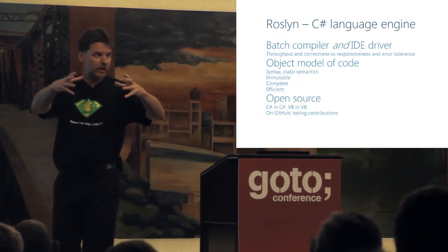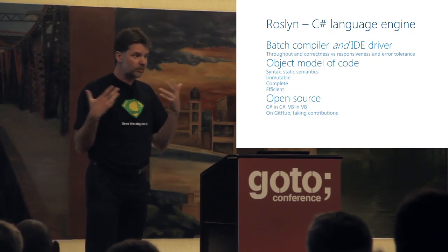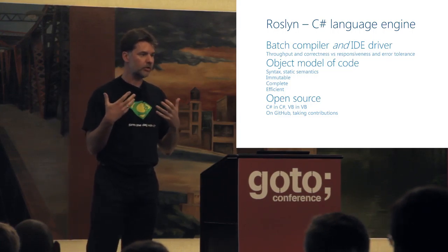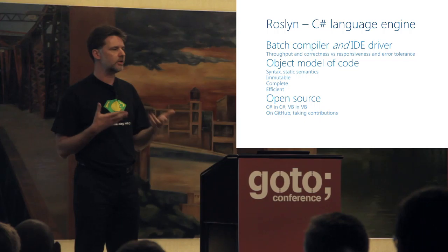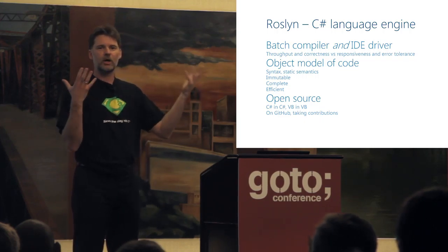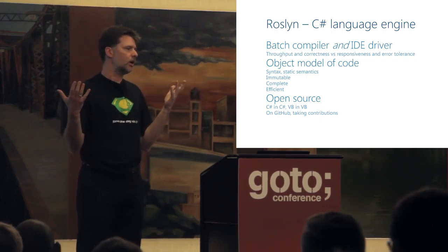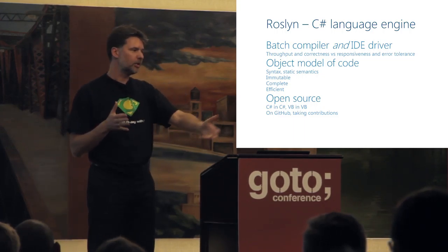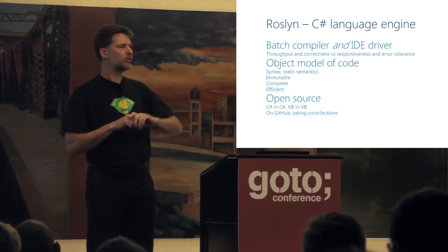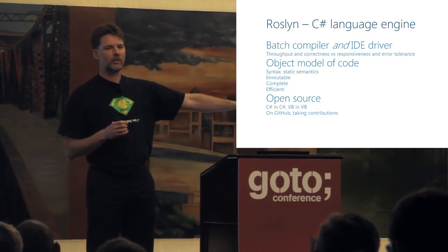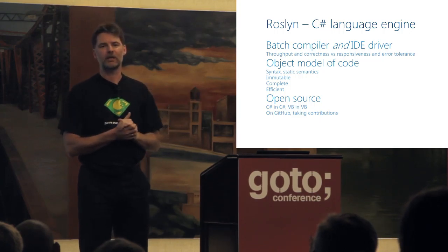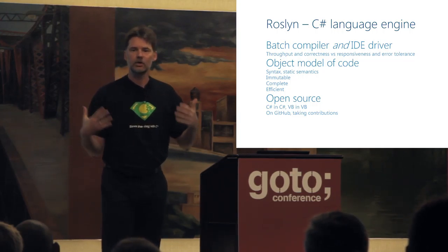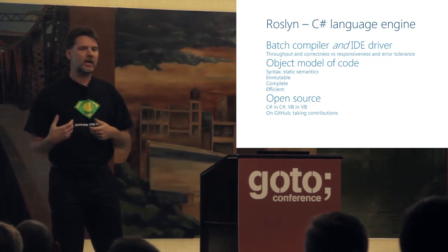I want to start focusing on the Roslyn engine itself. It works both as a batch compiler — it'll generate IL — and it's also the driver for the IDE. A big challenge is that there are conflicting pressures for those two purposes. For batch compilation you want to focus on throughput and correctness, producing great executable code fast. Whereas in an IDE you want responsiveness and great error recovery, because when somebody's typing the code is wrong most of the time.